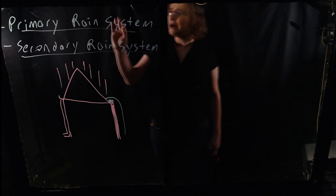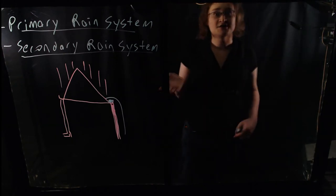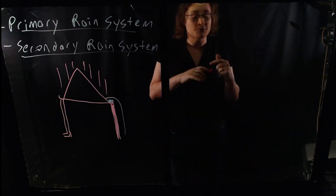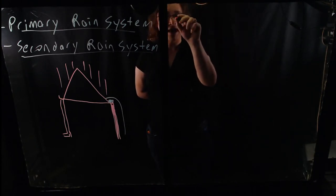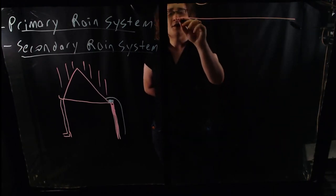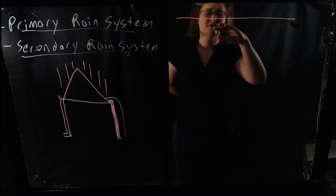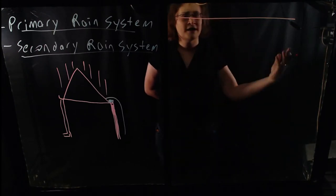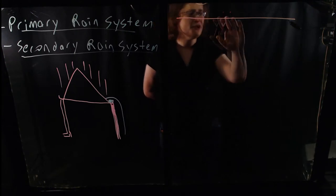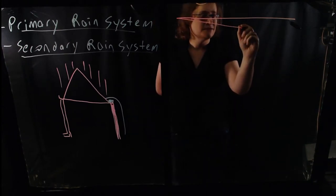Where the primary versus secondary rain collection system really comes into play is in larger structures, and particularly larger structures with flat roofs — or low-slope roofs, because technically there's no such thing as a flat roof. Even on buildings that we would describe as having a flat roof — like the roof of a warehouse, a big box store, or a big office building — even though if you were standing on top of that roof you might describe it as flat, in reality it has a very, very slight, very shallow slope to it.